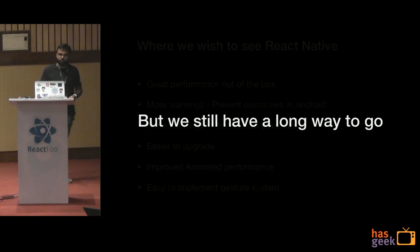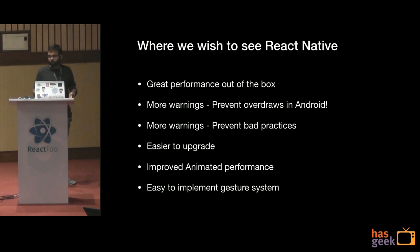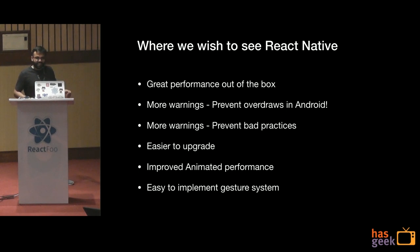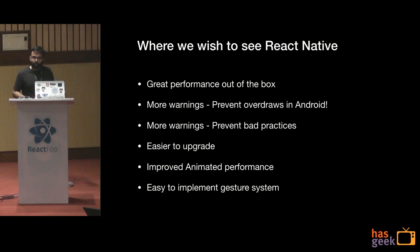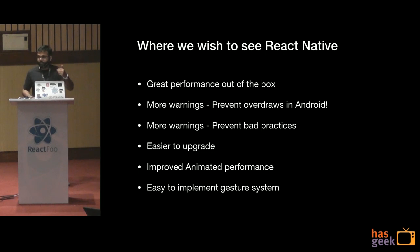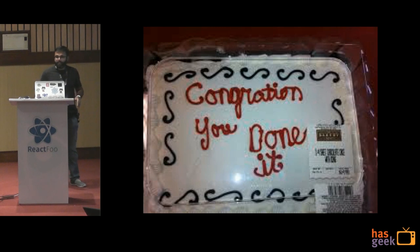We'll continue to use React Native — no matter what. As long as I'm there, I'll be using React Native for sure. Where we wish to see React Native go: we wish there was great performance out of the box — maybe the newer architecture will solve that. I wish there were more warnings on preventing overdraws in Android, more warnings on general bad practices in how you write components, and it should be easier to upgrade — I spent about 25 days upgrading to a new version. Meet me in the cafeteria and I'll tell you how we did that too. Improved animated performance and an easy-to-implement gesture system would also be great — I don't know how to use the gesture system even today. Thank you.